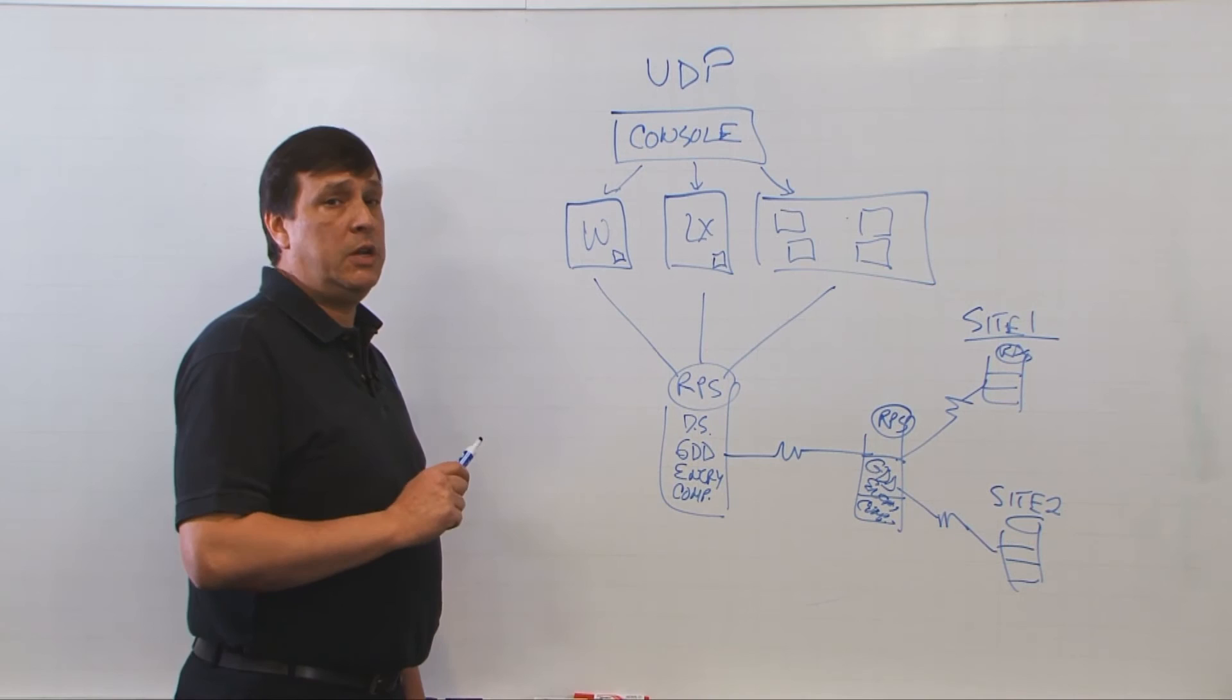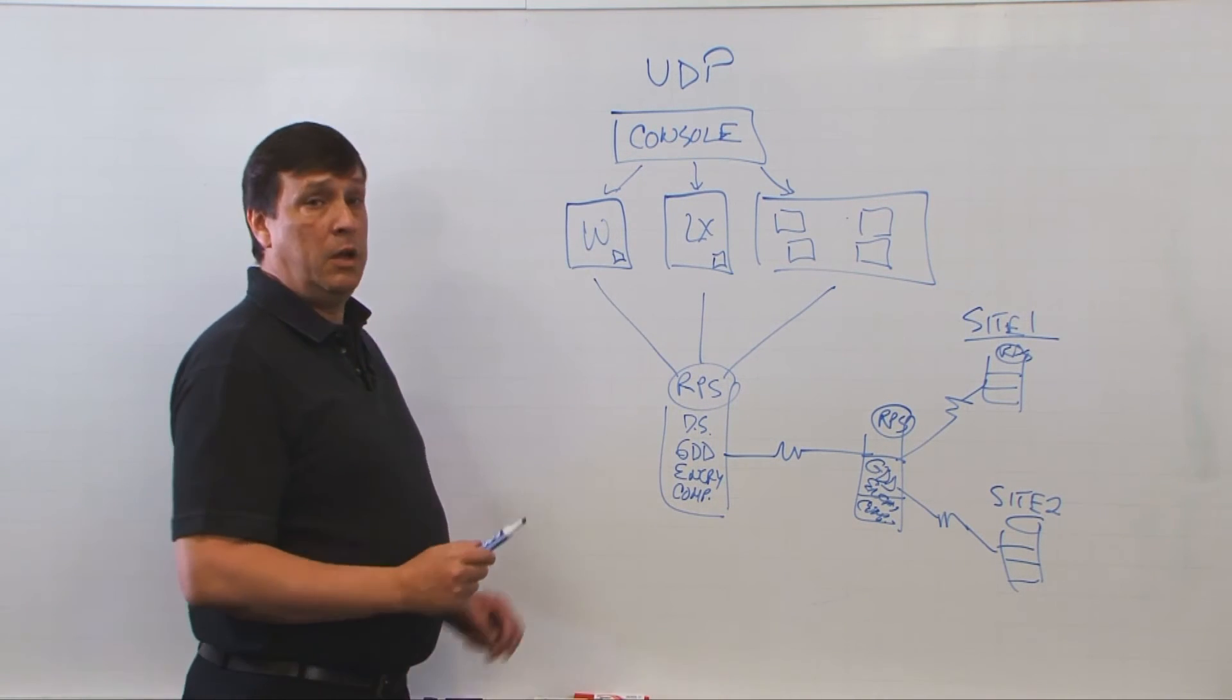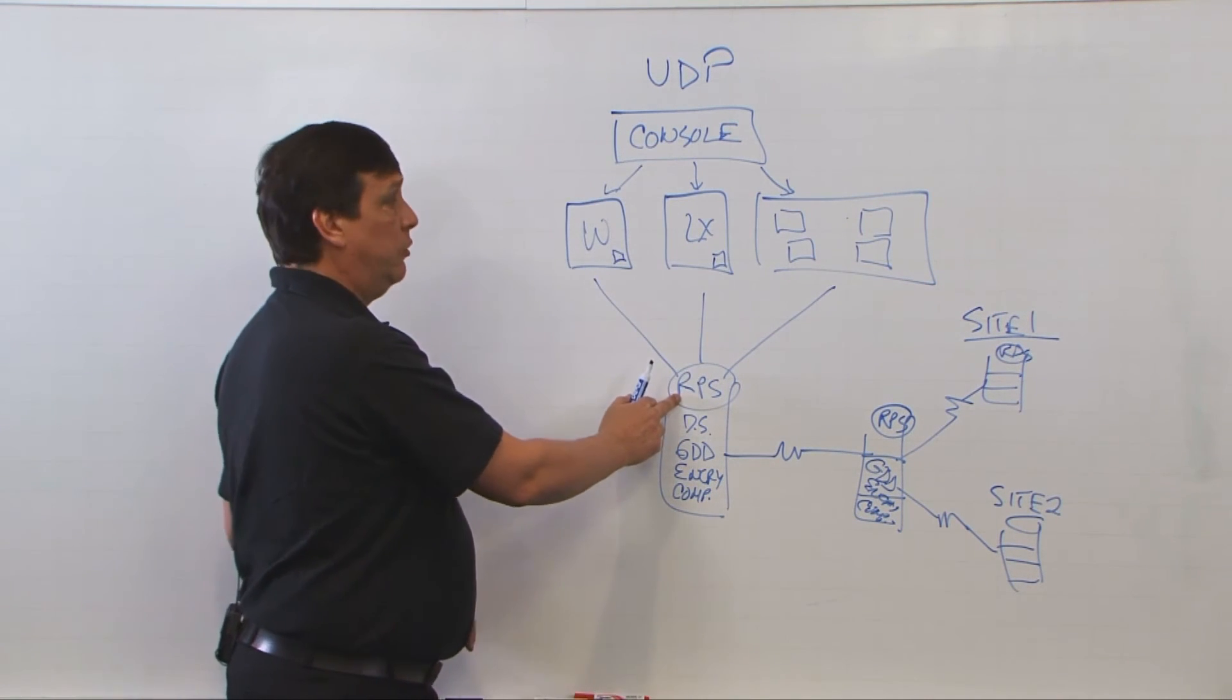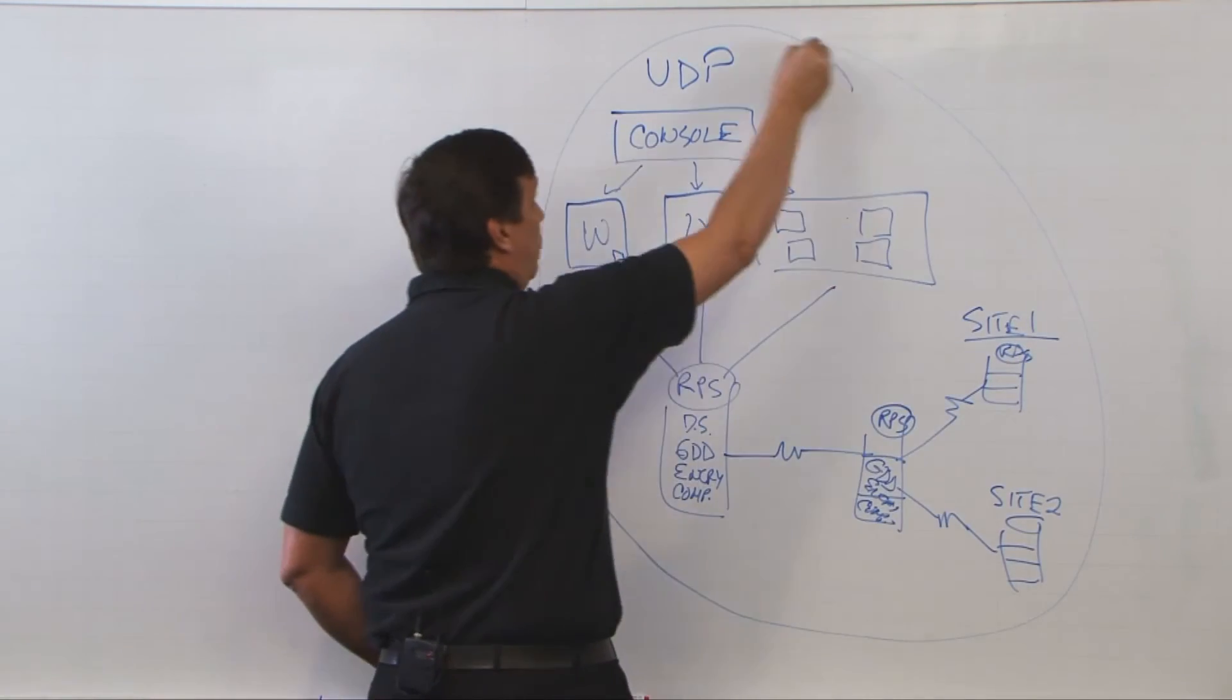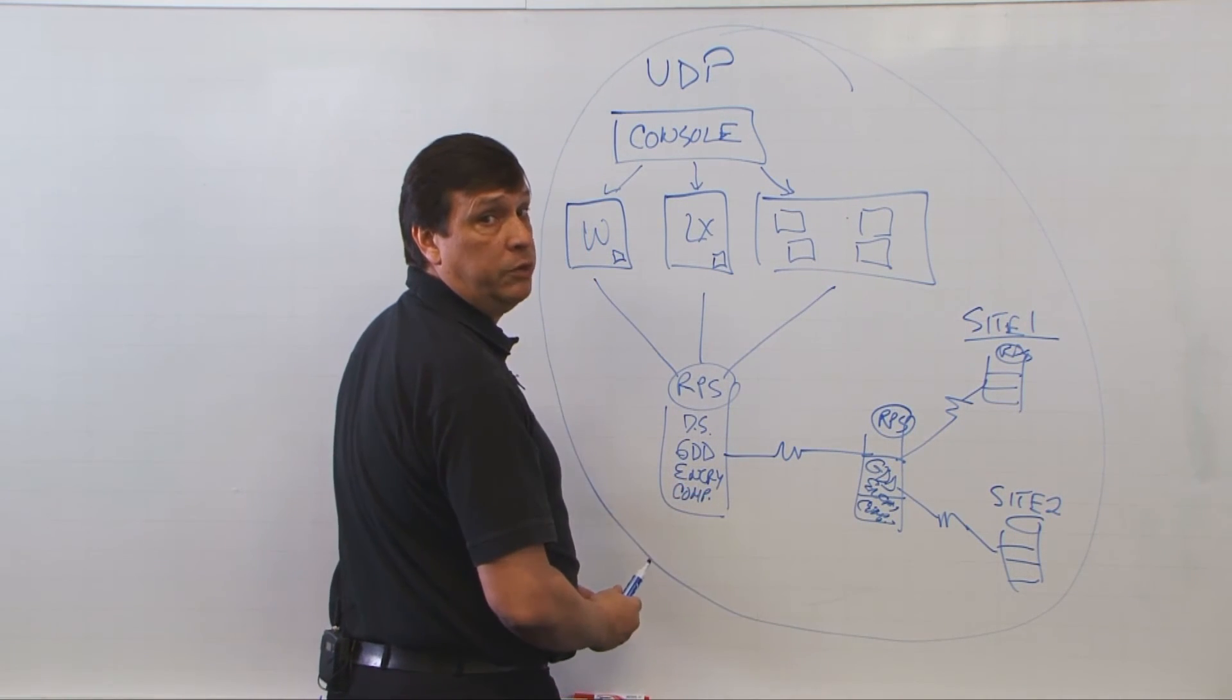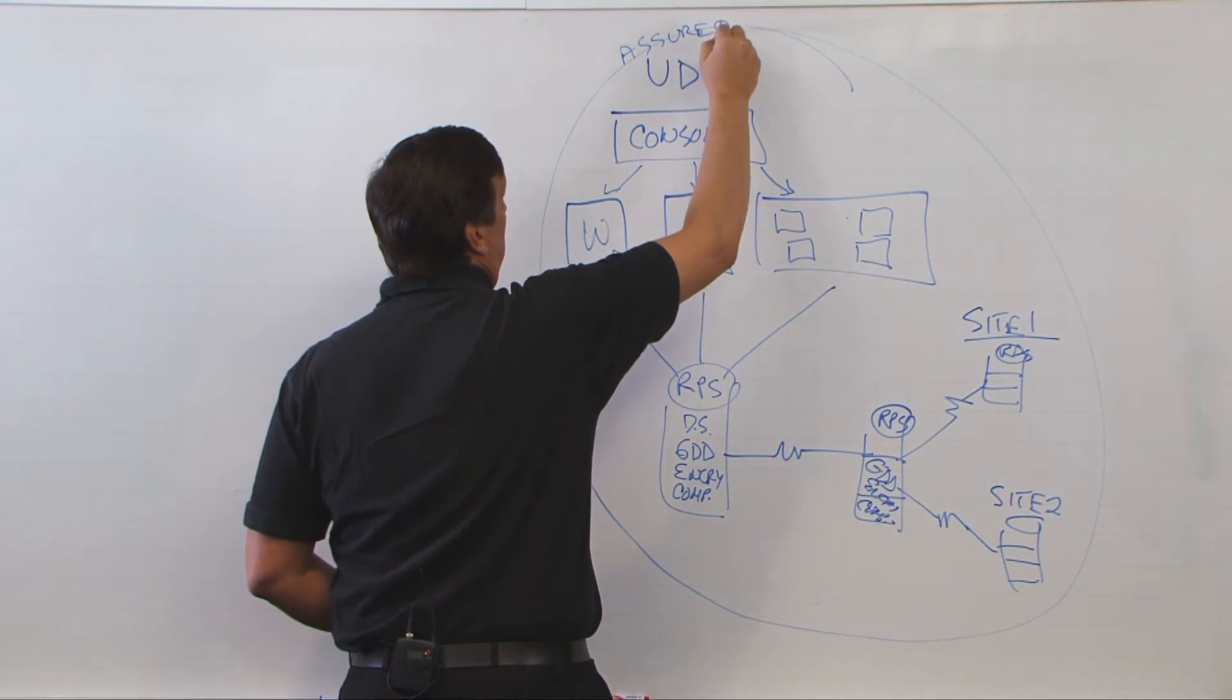So this is a high-level architecture of unified data protection or UDP. The three main components: console, agents, recovery point server. All this, centrally managed via the console, with global deduplication from multiple RPS stores, gives you a short recovery.